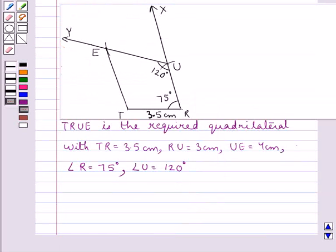Hence, TRUE is the required quadrilateral with TR 3.5 cm, RU 3 cm, UE 4 cm, angle R 75 degrees and angle U as 120 degrees.